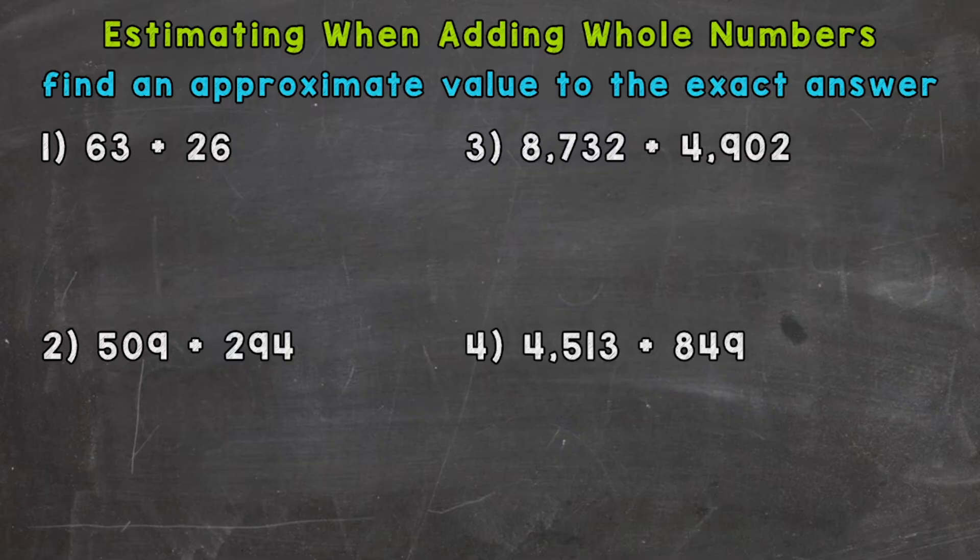In this specific video I'm going to cover estimating when adding whole numbers. So let's jump into number one where we have 63 plus 26 and the first strategy I want to mention is called front-end estimation. That just means that we're going to round the numbers in the problem to the greatest valued digit, so the digit furthest to the left.